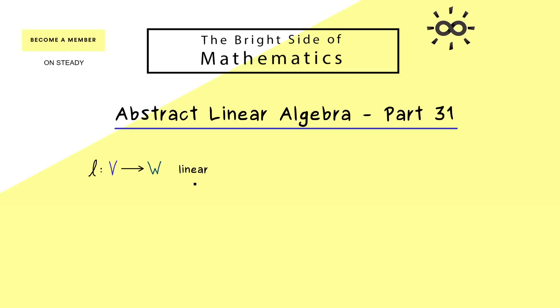Okay, then let's immediately start by considering a linear map between two general vector spaces V and W. This means that V and W are chosen as F-vector spaces where F is either given by the real numbers or by the complex numbers.